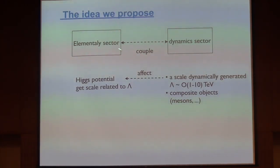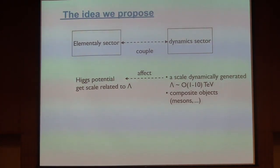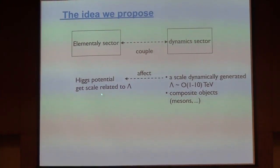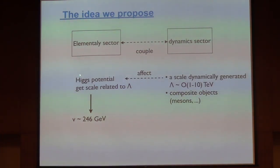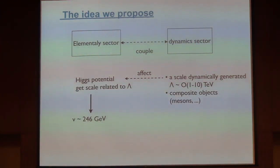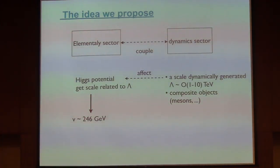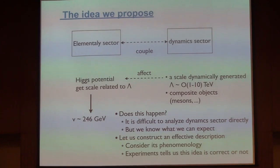If this coupling is very strong, the scale in the Higgs potential must be the same as lambda. If this coupling is very weak, the scale in the Higgs potential is almost independent from lambda. But if the coupling is not too strong and not too weak, then we can expect the scale in the Higgs potential becomes the electroweak scale. This is the assumption and story of the partially composite standard model. The question is: does this actually happen?